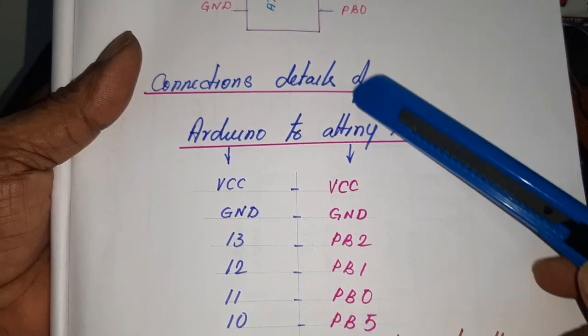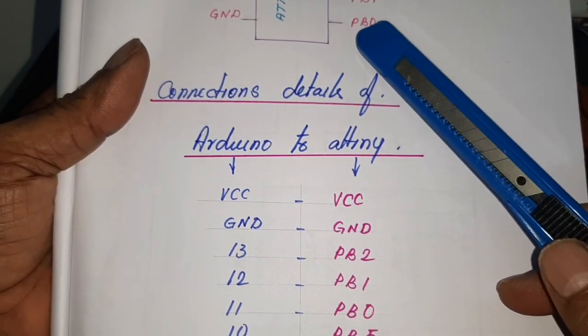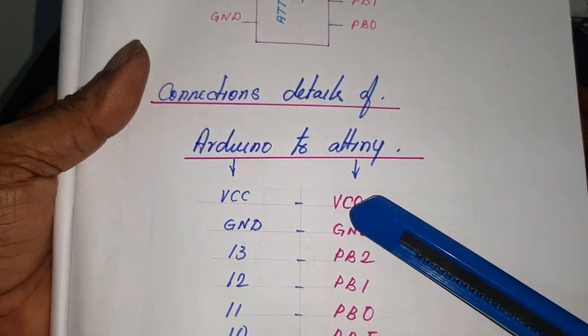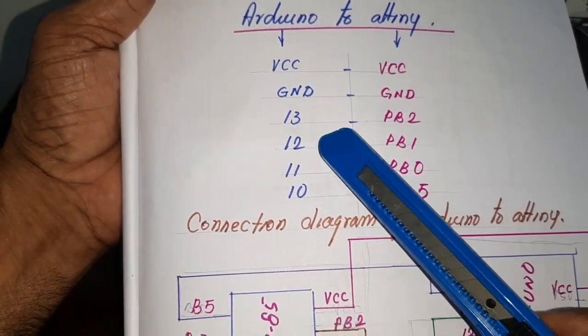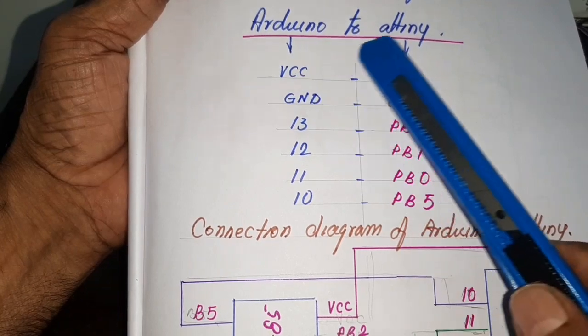Here, the ATtiny 85 is programmed by using through the Arduino. Here, the connection diagram of the Arduino to ATtiny.